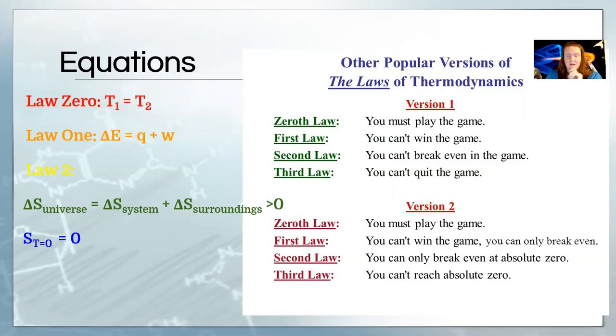And then lastly we have—I didn't write this but it's the third law of thermodynamics—and it just says that when temperature is zero, entropy is also zero. We're talking about zero Kelvin, not zero Celsius, just to be clear. Here's an easier way to remember it, and there's two different versions depending on your perspective. So the zeroth law says you have to play the game. I just told you you're in contact with things.